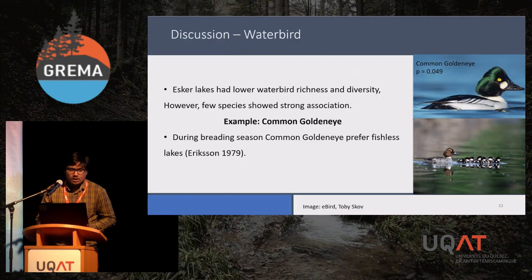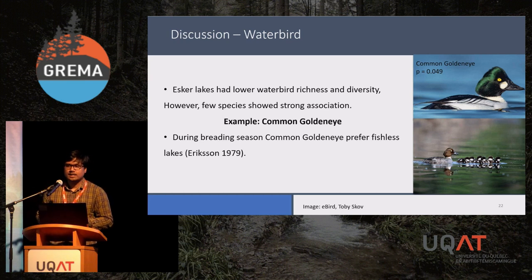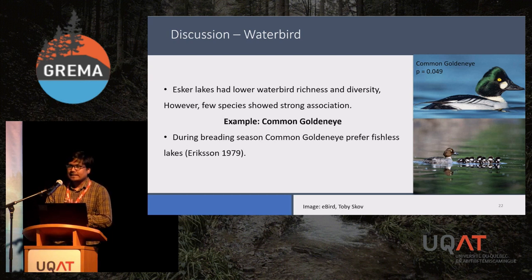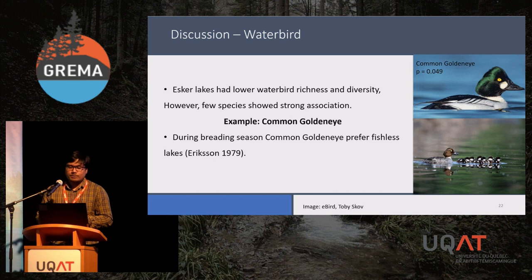Now the discussion. ESCR lakes had lower waterbird richness and diversity; however, a few waterbird species showed strong association with these lakes. For example, common goldeneye specifically preferred fishless ESCR lakes because in summer when they rear ducklings, they prefer fishless ESCR lakes — they don't like competition with fish, because both fish and waterbirds feed on macroinvertebrates.